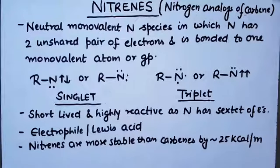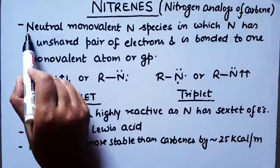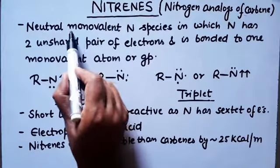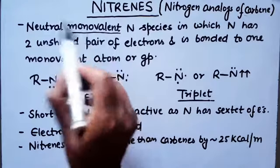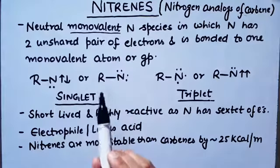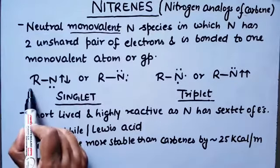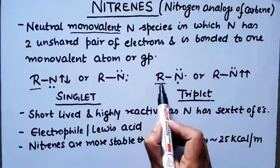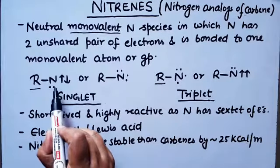What is the difference between nitrenes and carbenes? In nitrenes, nitrogen is present — they are neutral, monovalent nitrogen species. Carbenes are bivalent carbon species with two R-groups or H-groups. Nitrenes are monovalent and have one alkyl group.